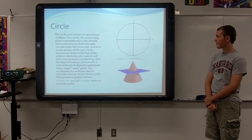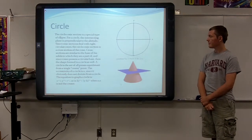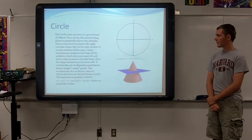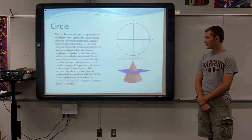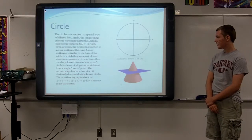Cross sections are similar to the base of the solid to which they are a part of, and since cones possess a circular base, then the shape formed is always a circle as well. A circle is a set of all points that are equidistant from a single center point. The eccentricity of a circle is zero, since it obviously does not deviate from a circle.